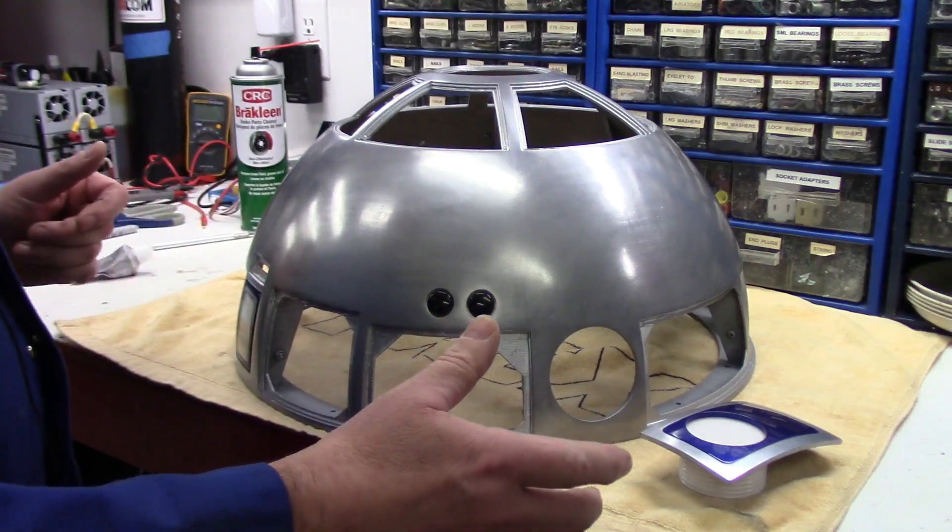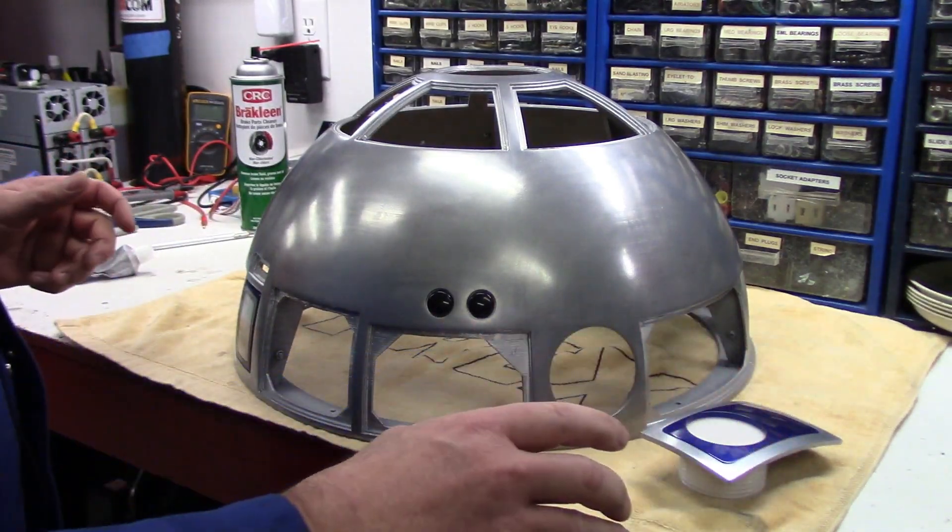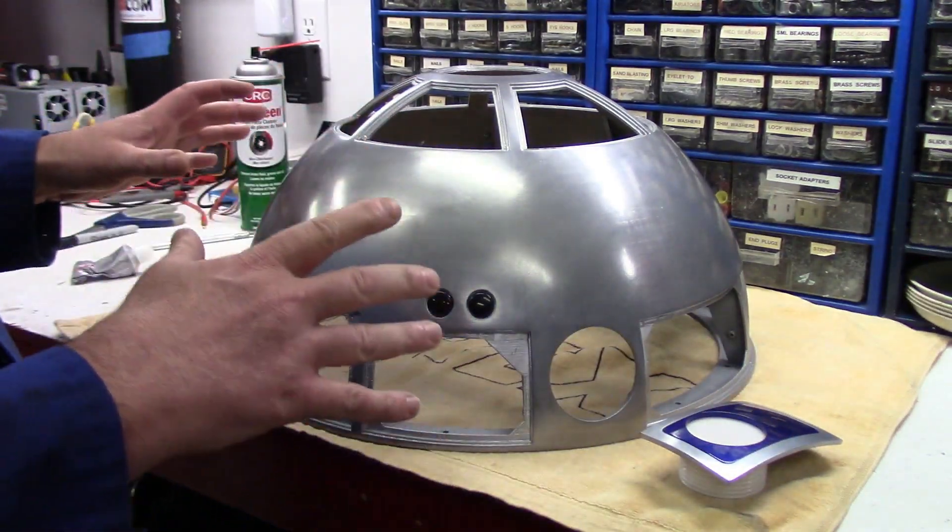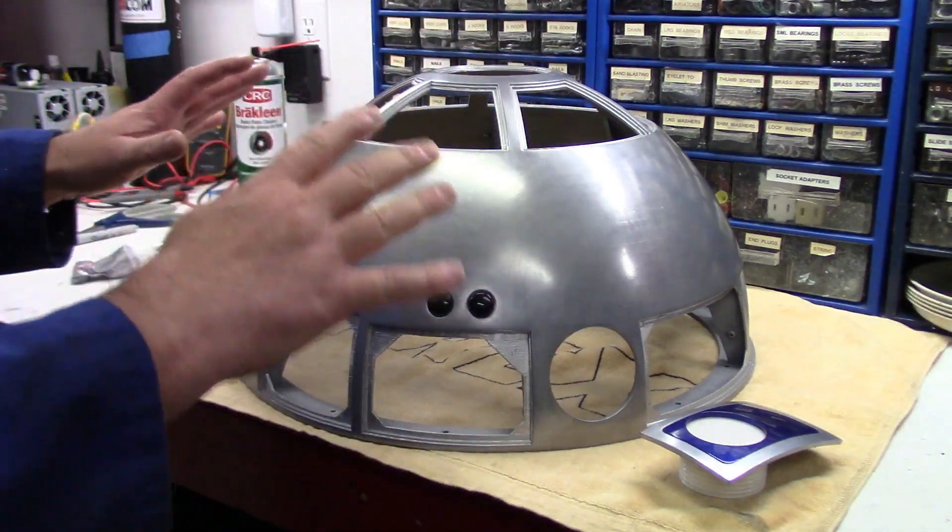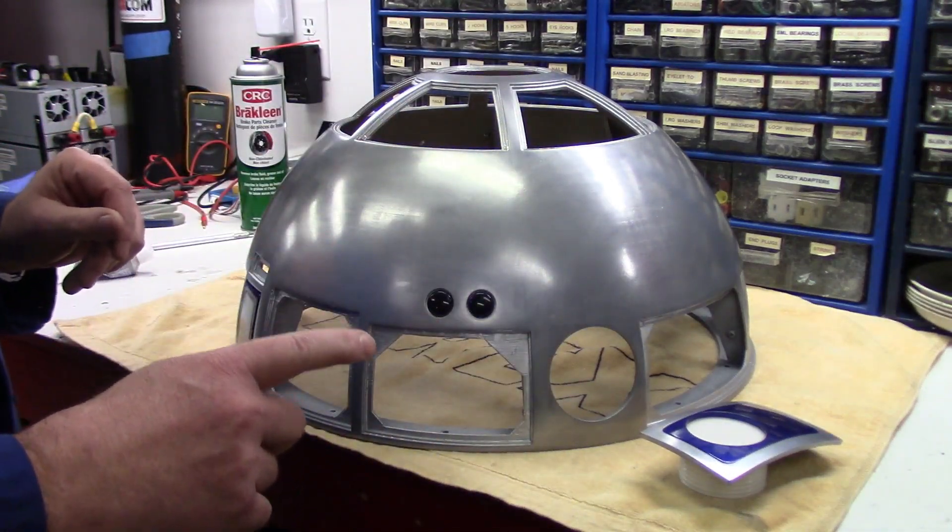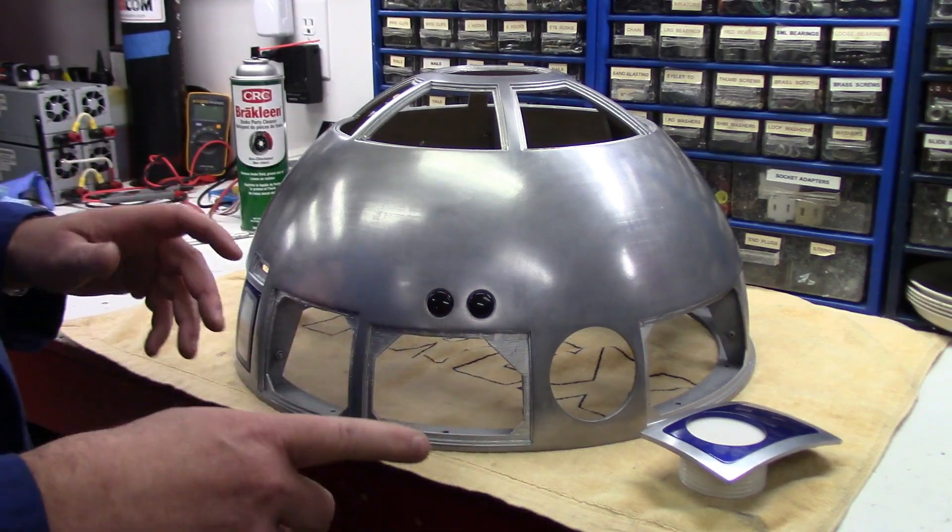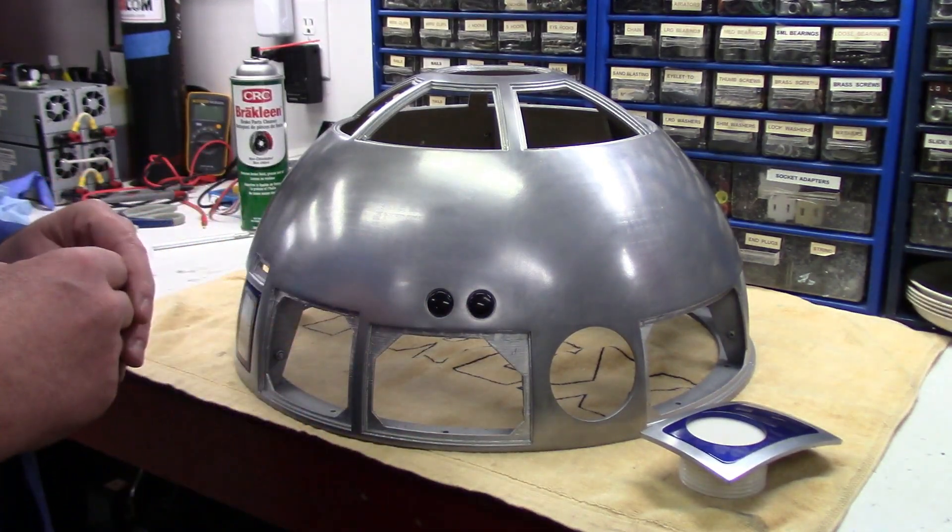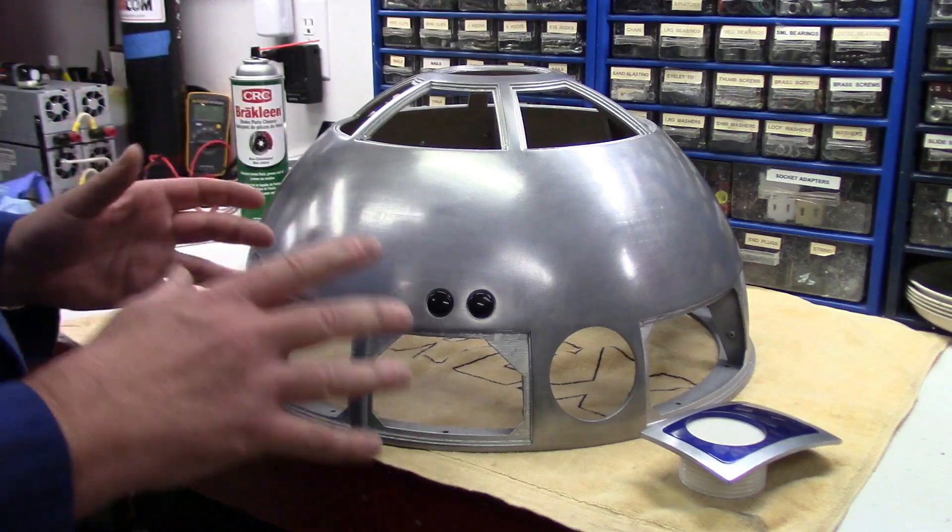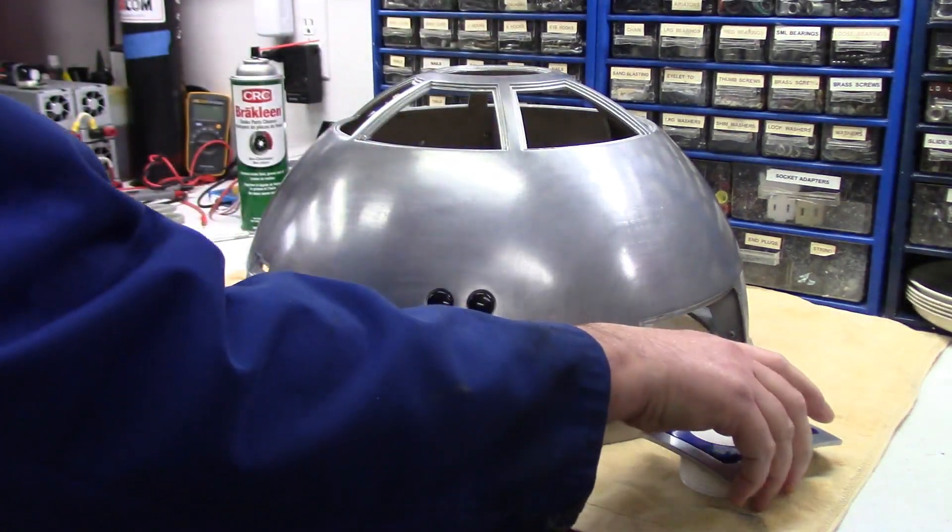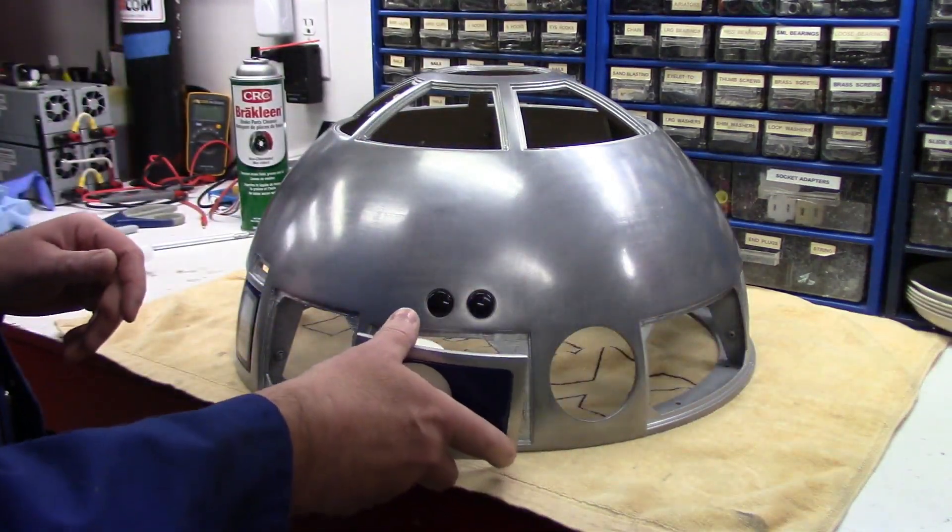So I'm just going to show you the method I'm going to use to glue all my panels in. Again, this is going to be a very simple R2 build. I'm not going to have any opening panels, but one thing with this method of using the hot glue and the goop is it can be cut out and removed if you ever did want to. Not that I'm going to, but hey, the option is there.